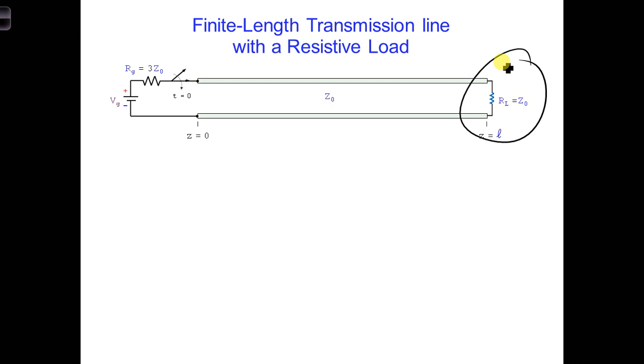Let's first consider a case where the same transmission line we looked at before is connected to a resistive load equal to the characteristic impedance of the transmission line. We know that V1 plus and I1 plus waves are created